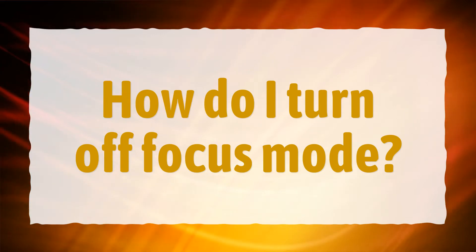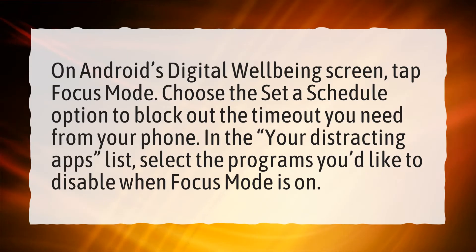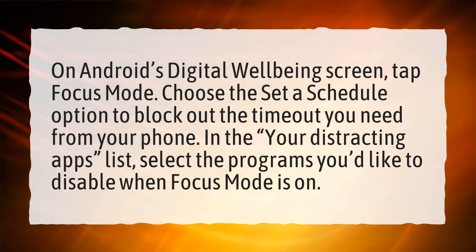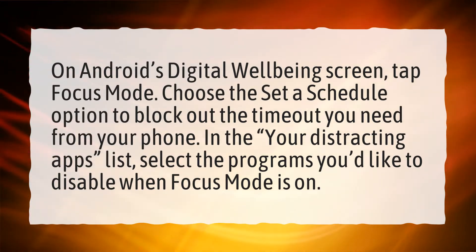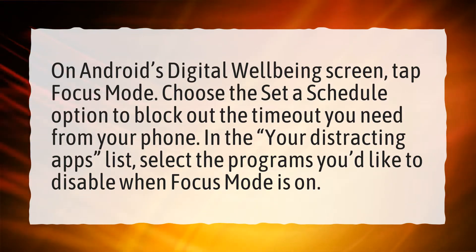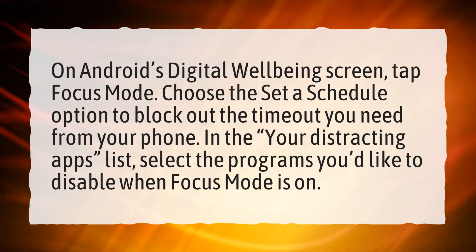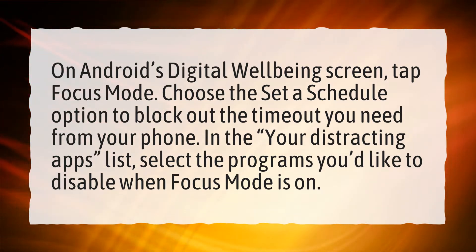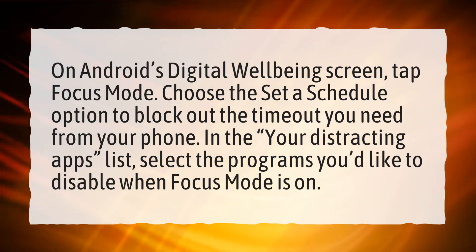How do I turn off focus mode? On Android's digital well-being screen, tap focus mode. Choose the set a schedule option to block out the timeout you need from your phone. In the distracting apps list, select the programs you'd like to disable when focus mode is on.